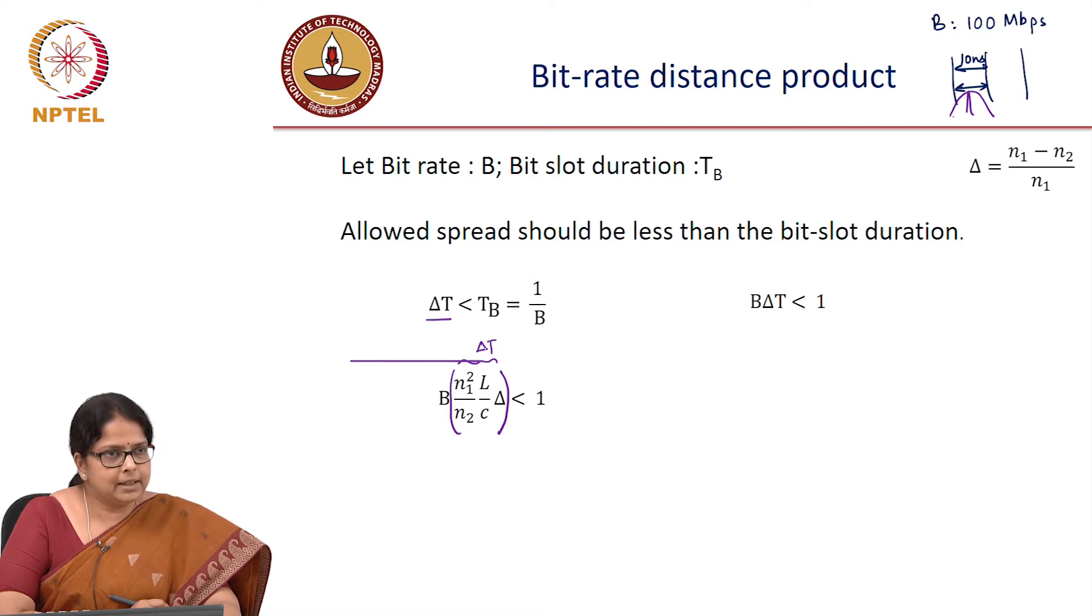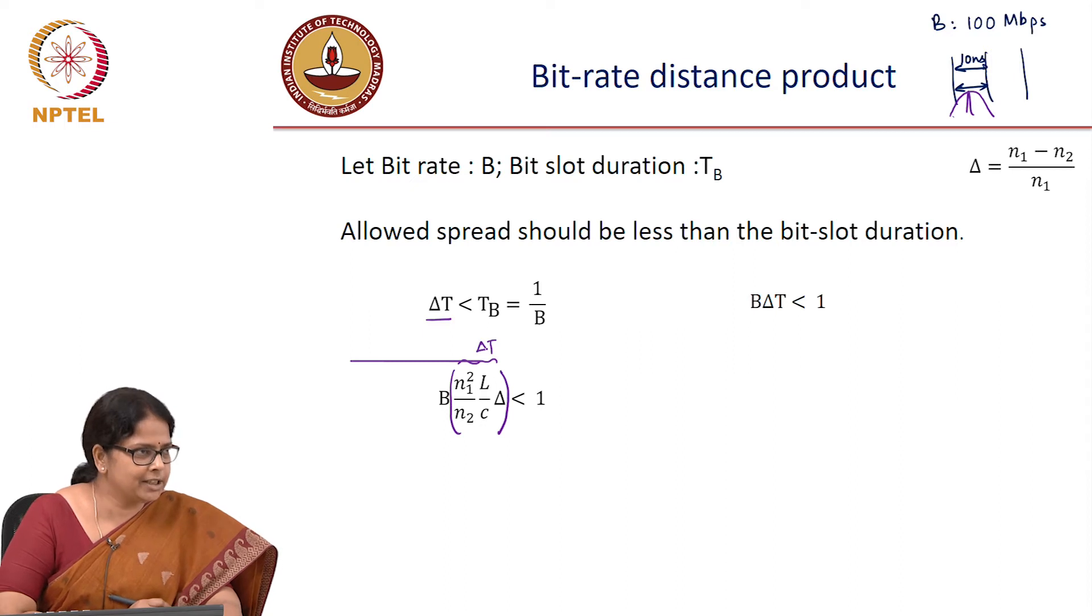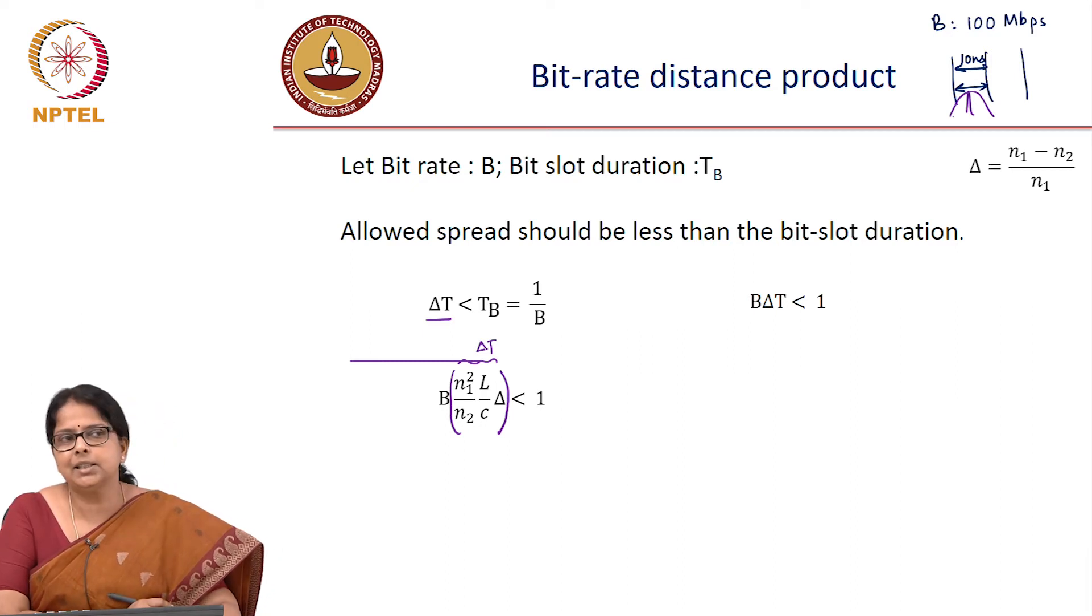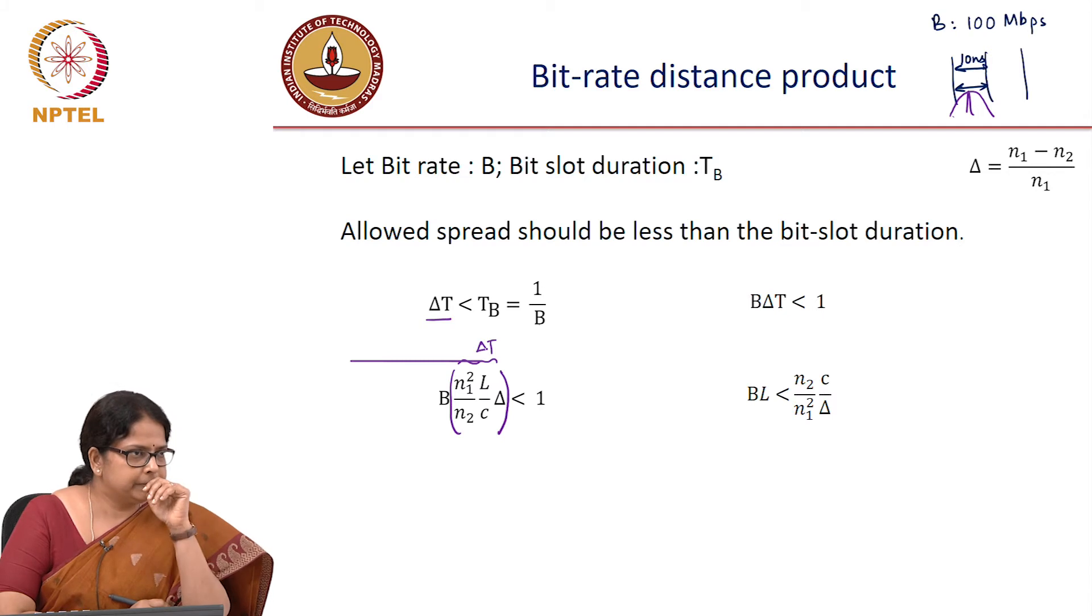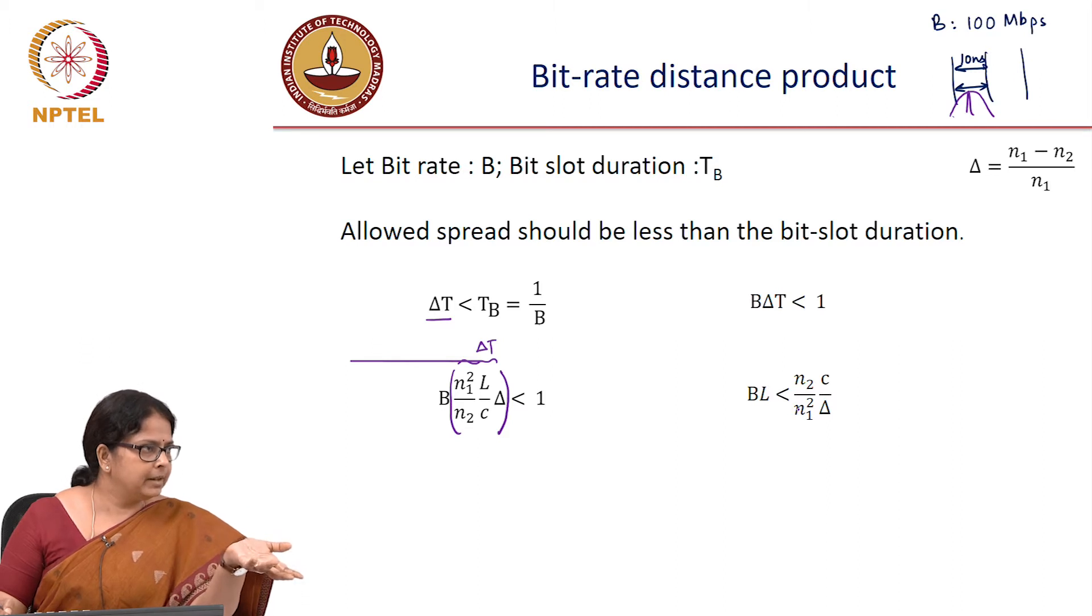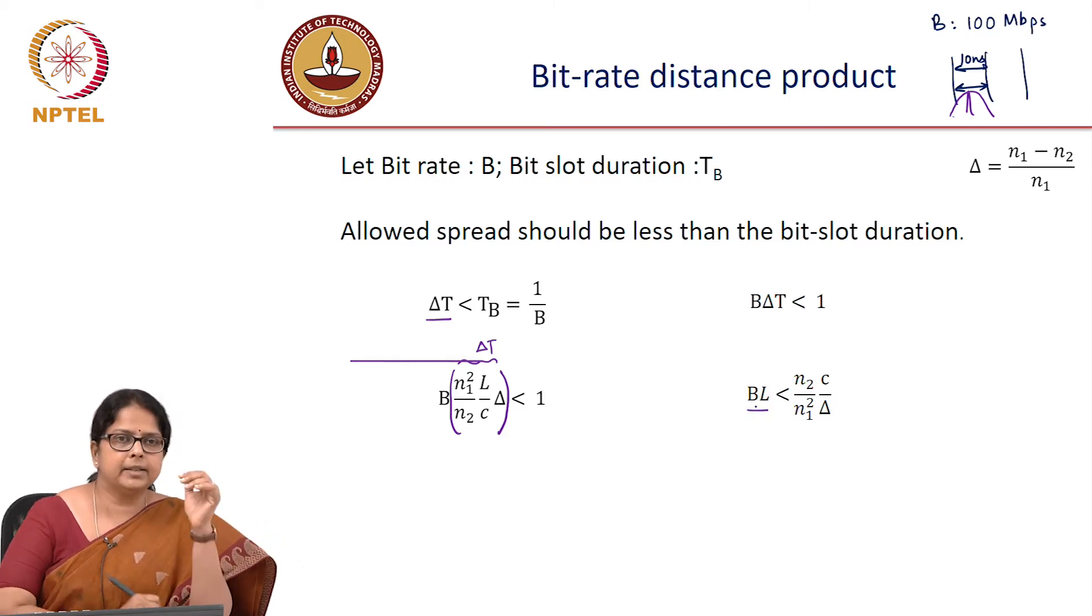Which means that for a system designer, the useful relation is bit rate distance product B L. It must be less than N2 C divided by N1 square delta. So I pick a fiber which has a specific N1 and N2 which means a specific delta that defines my bit rate distance product.